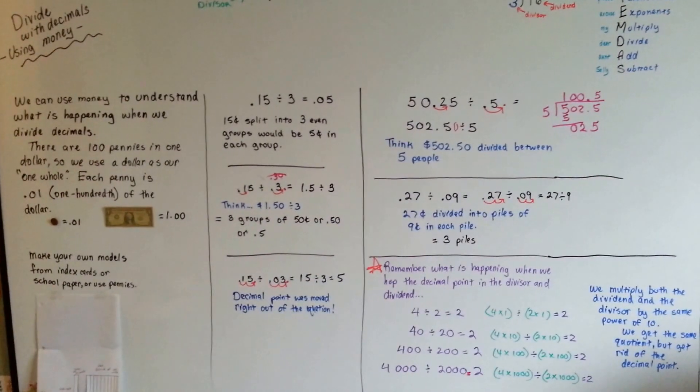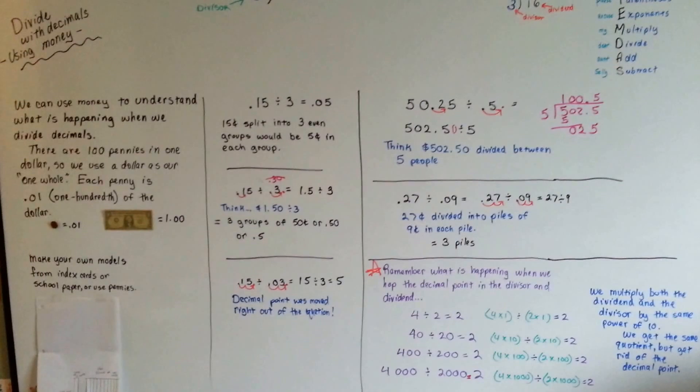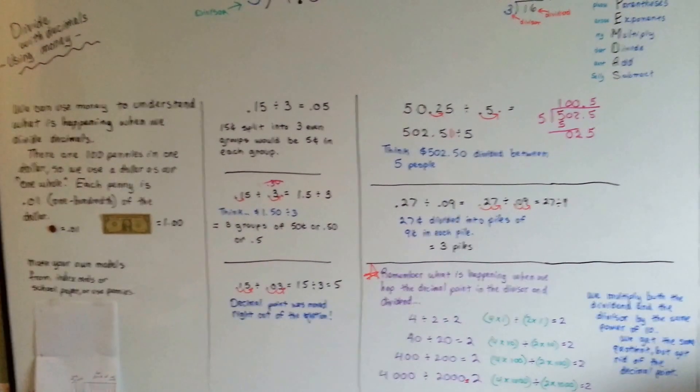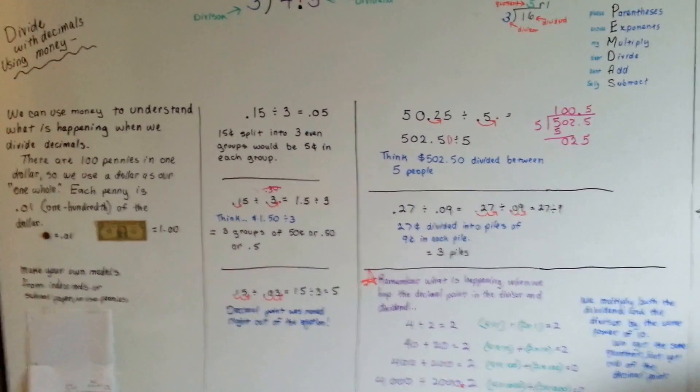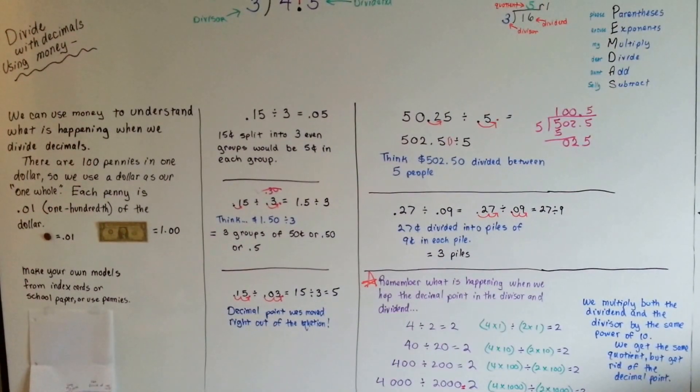If you have 100 pennies, it's going to help you divide decimals. You should try it and keep a little baggie of it off on the side. It'll actually help you. I'll see you next video.